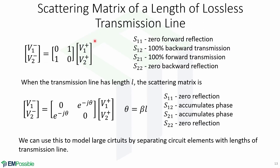Now, we will derive the scattering matrix of a length of lossless transmission line. First, we start with the two-port network of nothing, where S11 equals 0 forward reflection, S12 equals 100% backward transmission, S21 equals 100% forward transmission, and S22 equals 0 backward reflection. Now, when the transmission line has length L, the scattering matrix is given by this, where theta equals beta L. S11 equals 0, which means 0 reflection. S12 is a term that indicates accumulation of phase. S21 is also a term that indicates accumulation of phase, and S22 is 0 reflection. We can use this useful matrix to model large circuits by separating circuit elements with lengths of transmission line.